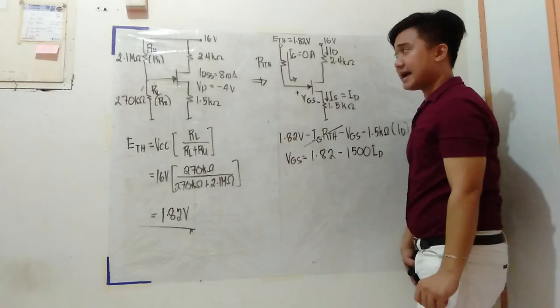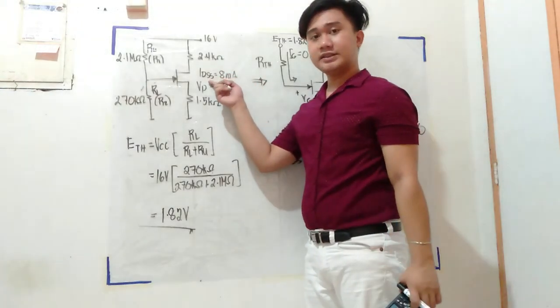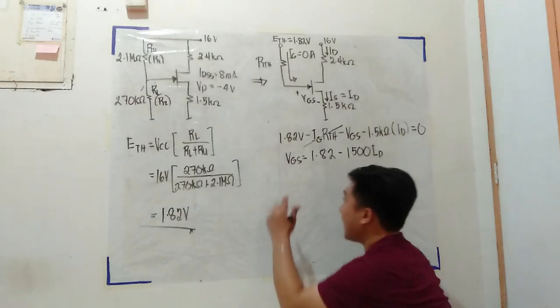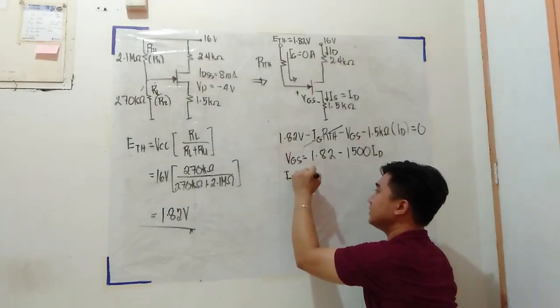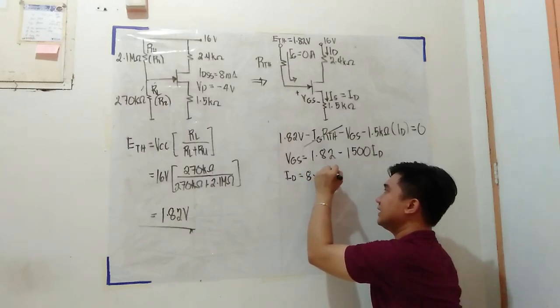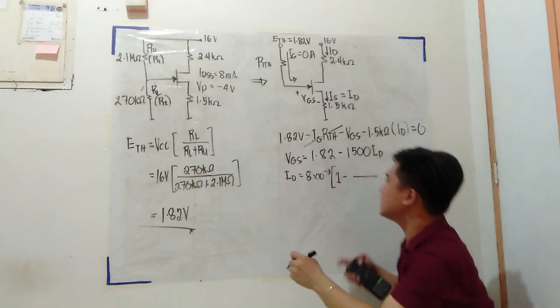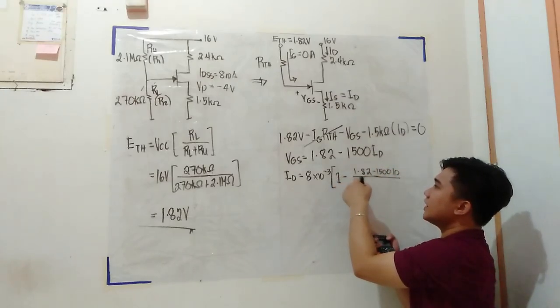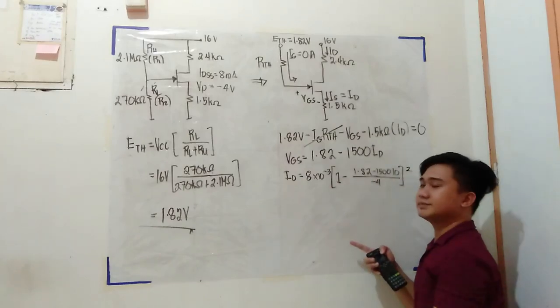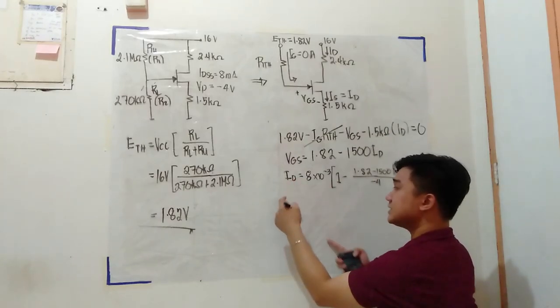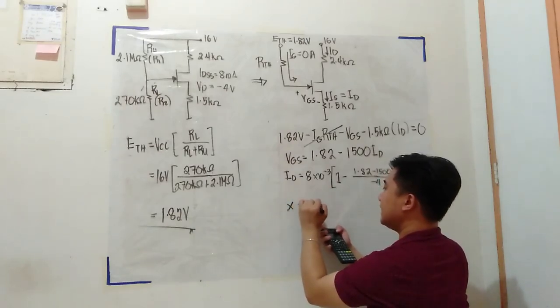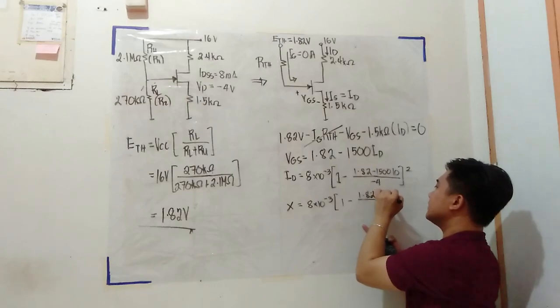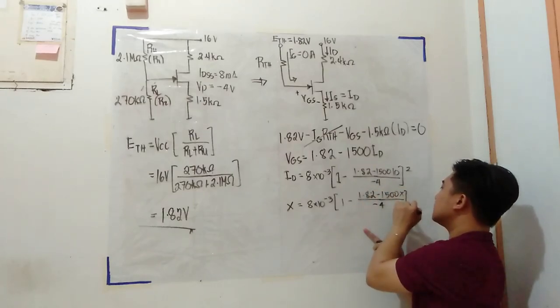So next I need to find ID. Given in the specification that IDSS equals 8 milliampere and VP equals negative 4 volts. So ID equals IDSS which is 8 milliampere or 8 times 10 raised to negative 3, 1 minus VGS which is 1.82 minus 1500 ID all over VP which is negative 4 squared. How to type this in the calculator again? Set ID as X. So X equals 8 times 10 raised to negative 3, 1 minus 1.82 minus 1500 X all over negative 4 squared.